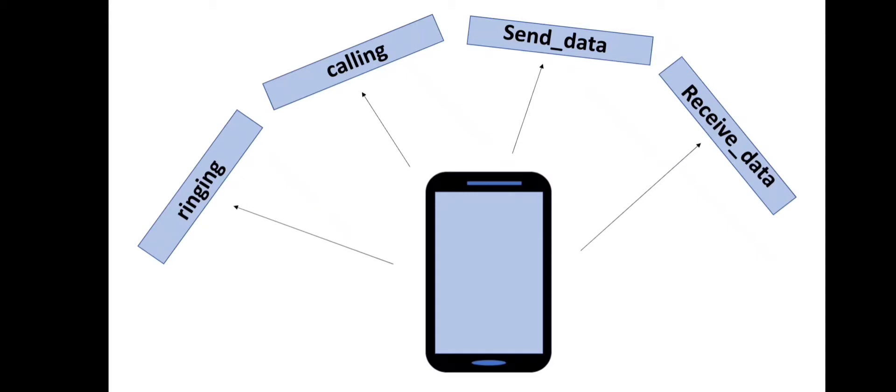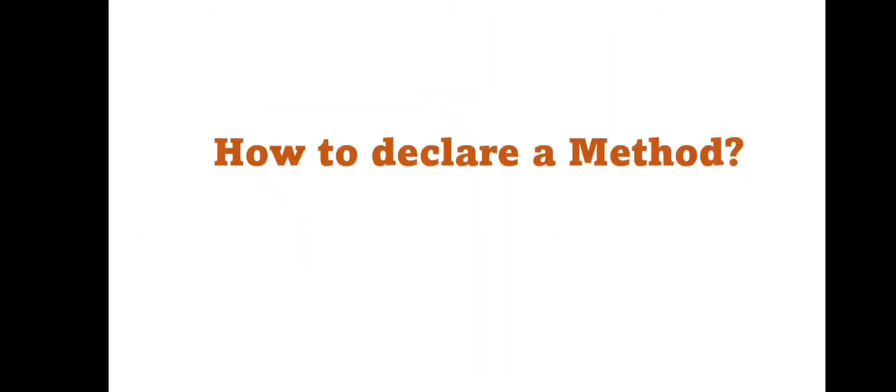In Java, a method is a function. It is used to perform certain tasks in the program to get the expected result. Now let's discuss about how to declare a method, or we can say how to create a method.